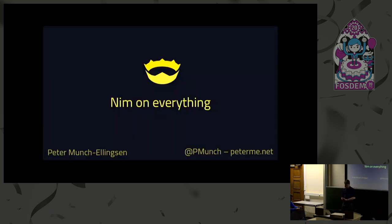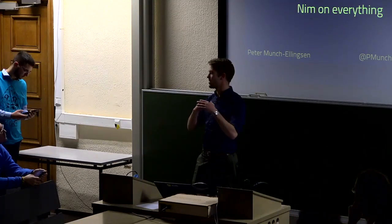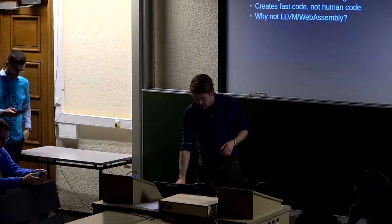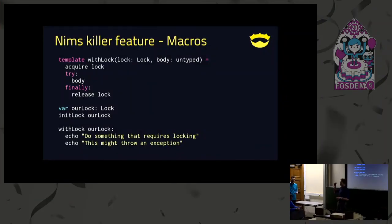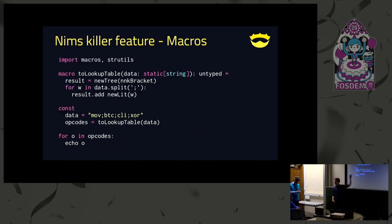That was my talk — a bit fast, but we're behind schedule. Q&A: what is the difference between macros and templates? Templates are more like macros in C — simple replacement. The lock and body in a template are just replaced with whatever you pass in, but otherwise the body is the same. In a macro, you create a new AST tree and add nodes into it. The code that comes out is not what you see, but what you generate through the AST.